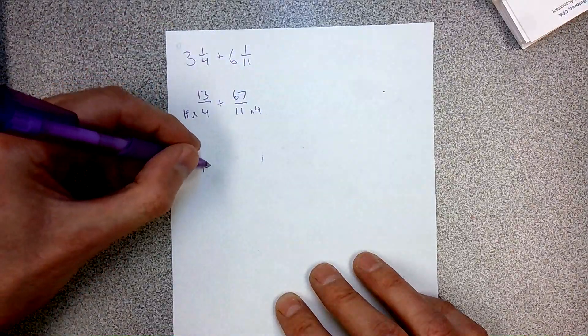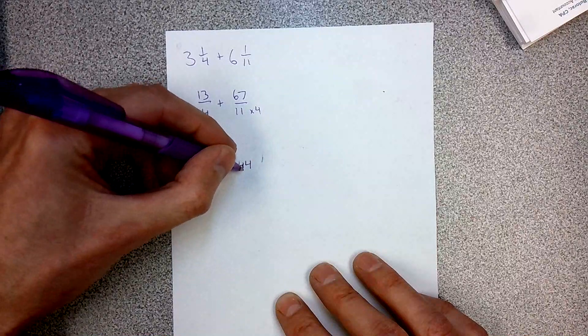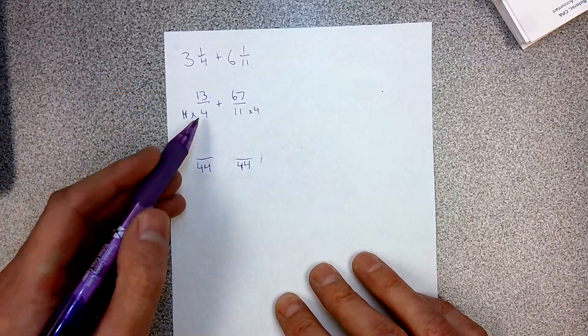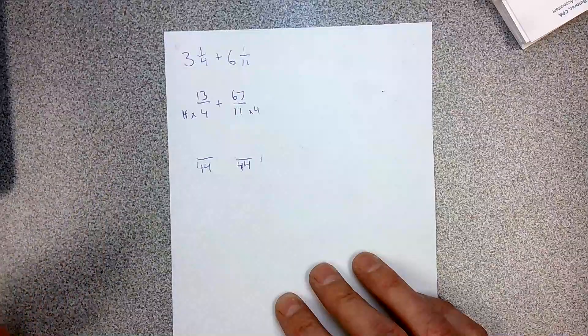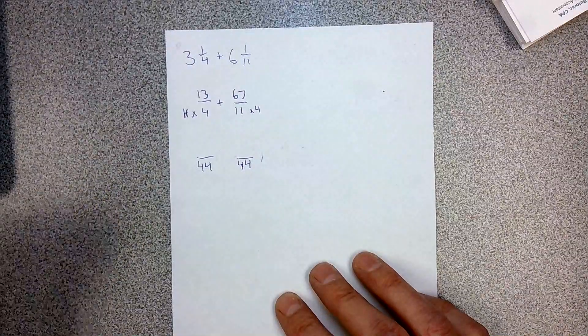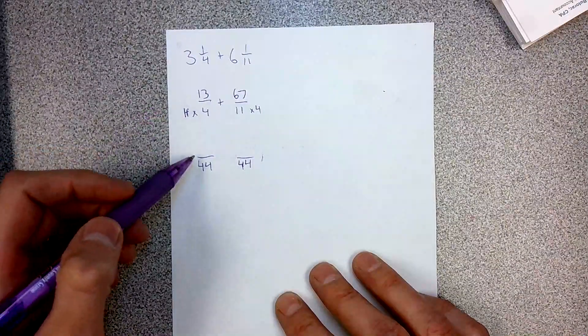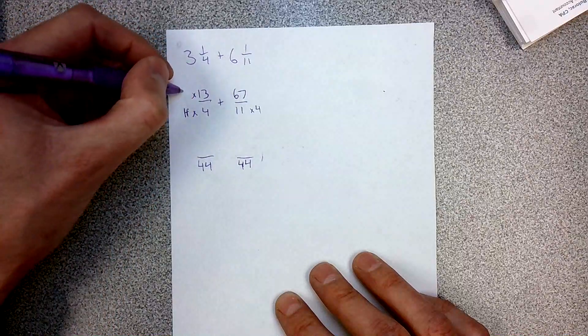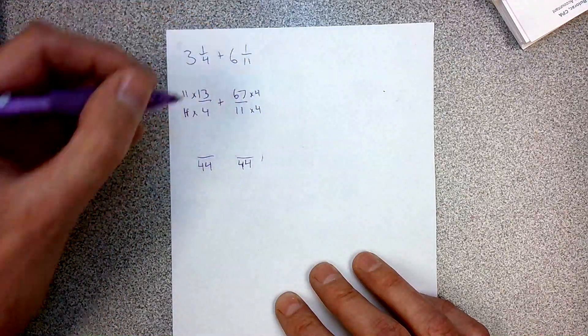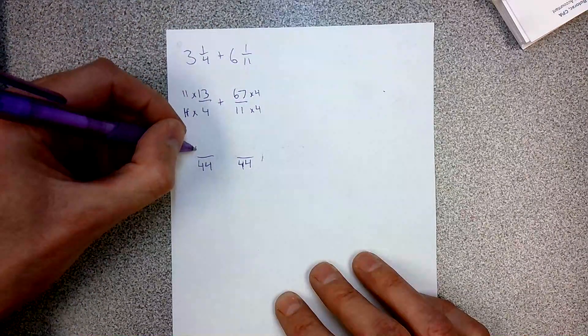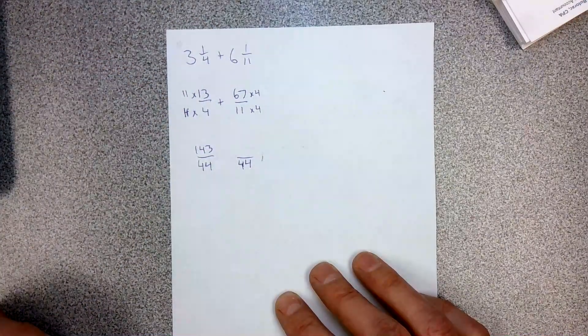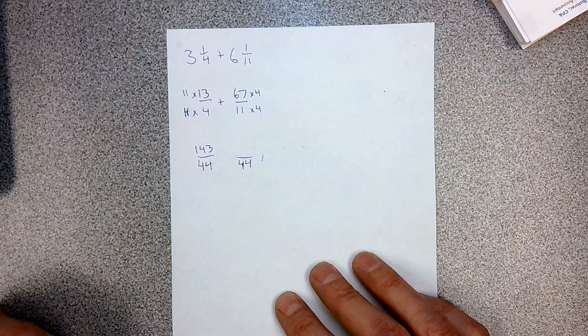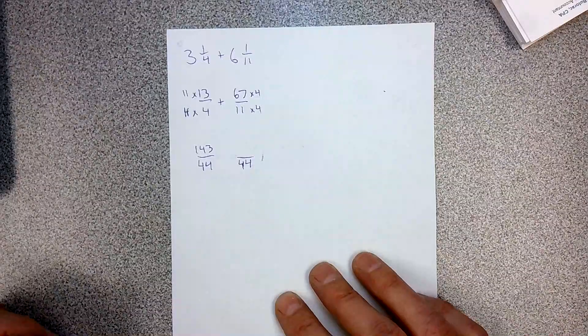You can always get a common denominator by multiplying the two denominators by each other. But that isn't always the lowest common denominator. But it always works. Whatever you do to the denominator, you have to do the same thing to the numerator. 13 times 11 is 143. And 67 times 4, 268.